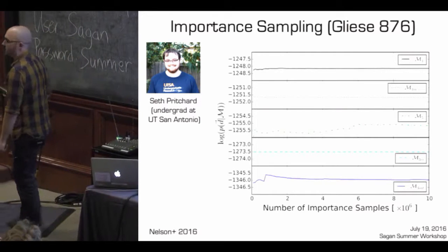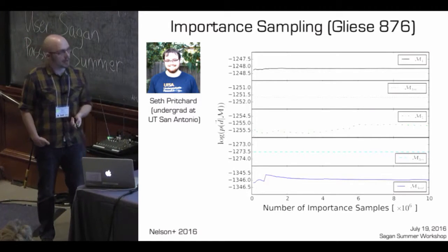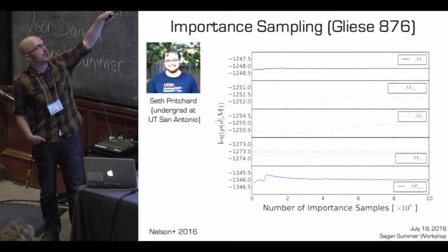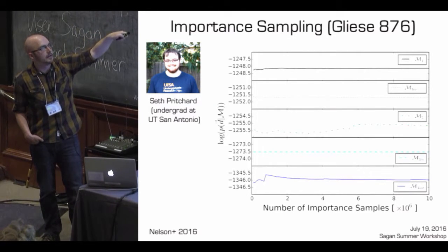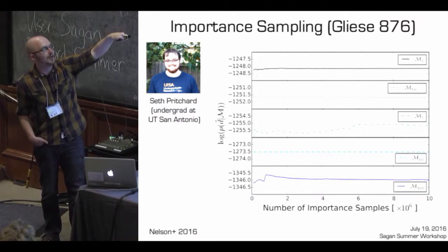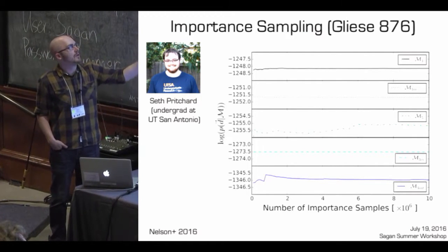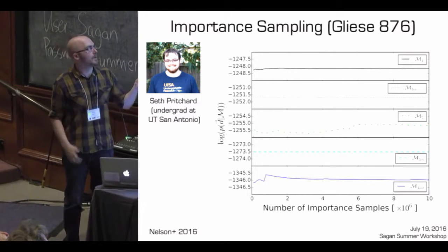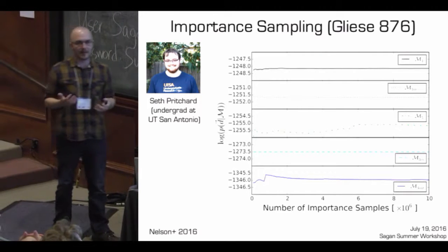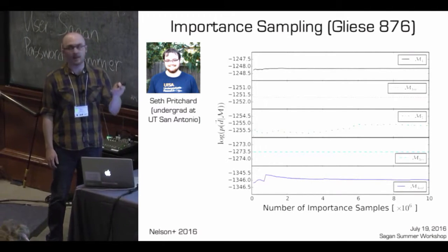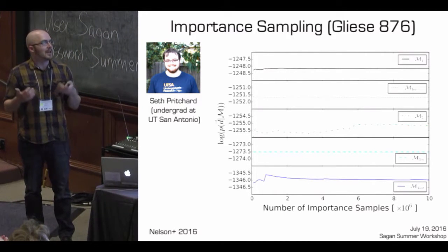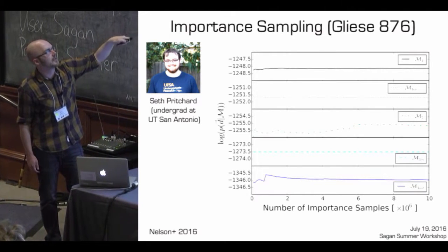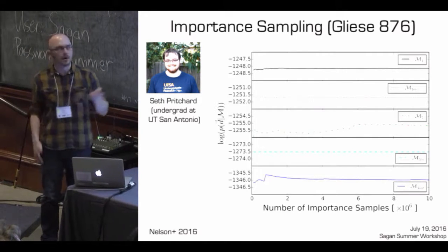We applied this to the planetary system of Gliese 876, work I did with undergrad Seth Pritchard at UT San Antonio. This plot shows five different models applied to a radial velocity data set for Gliese 876 — ranging from most probable at top to least probable at bottom in log evidence. These include a four-planet model, five-planet model, three inner planets, and three outer planets, showing how the estimate evolves with the number of importance samples. Convergence is a big issue — look at whether the estimate has actually converged. From our subset of models, the four-planet one was most probable.